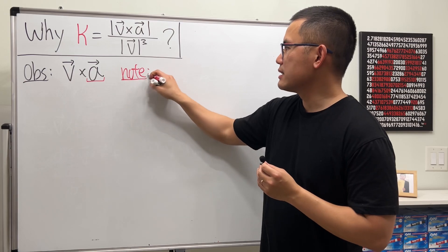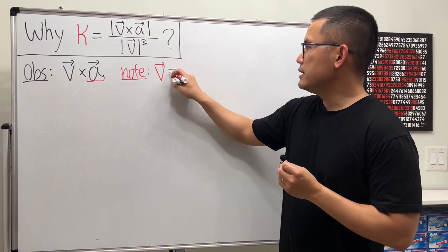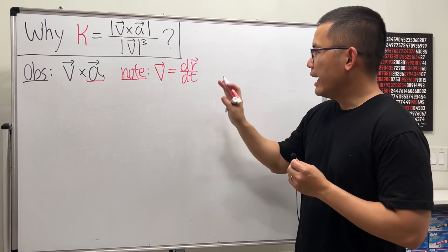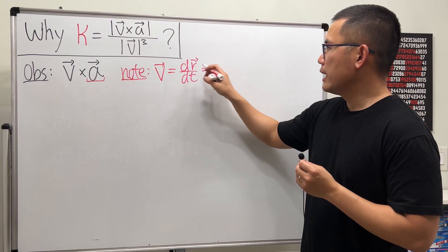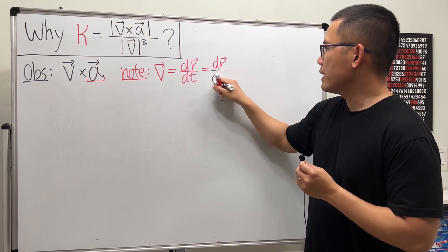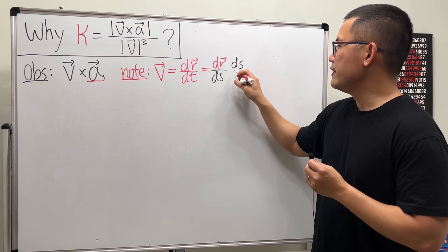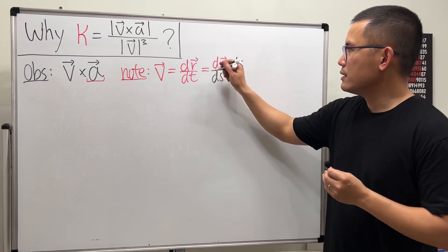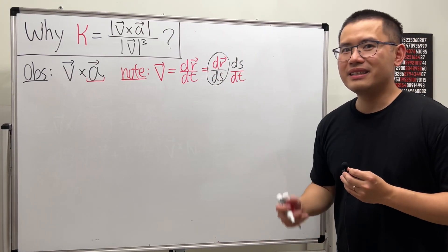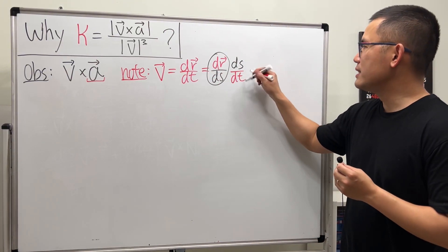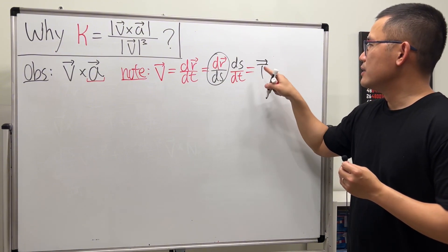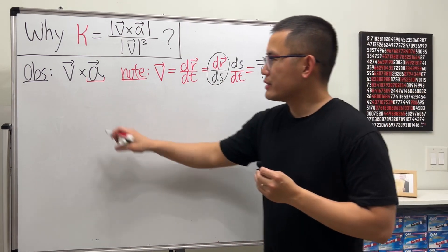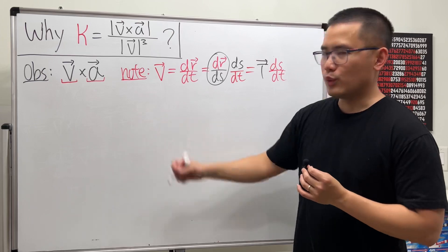Let me put a note on the side. v is equal to the derivative of r with respect to t. We can rewrite this as the derivative of r with respect to s first, and then differentiate s with respect to t by the chain rule. The derivative of r with respect to s is exactly the unit tangent vector T, so v equals T times ds/dt.